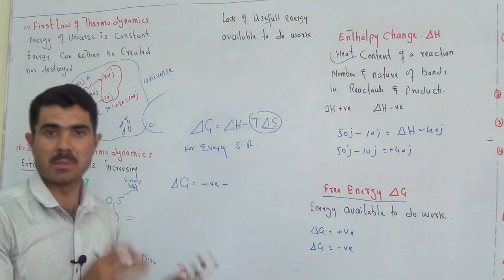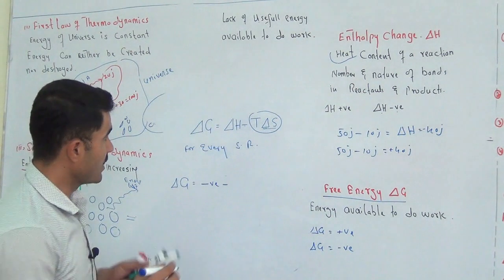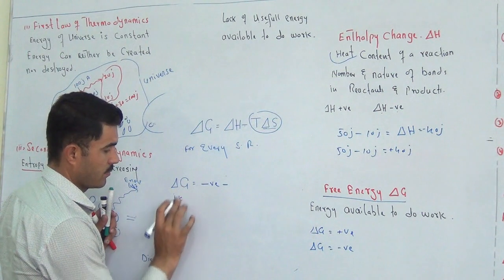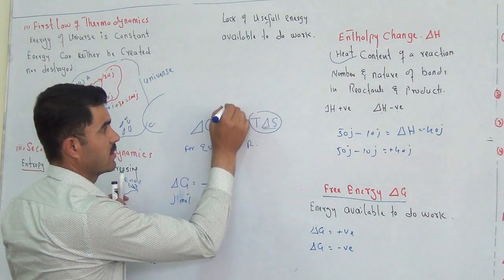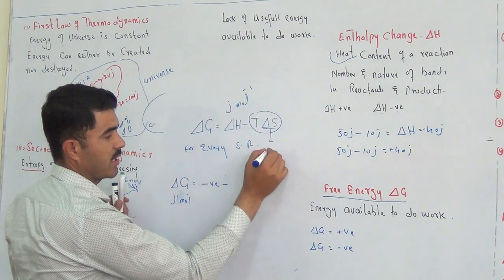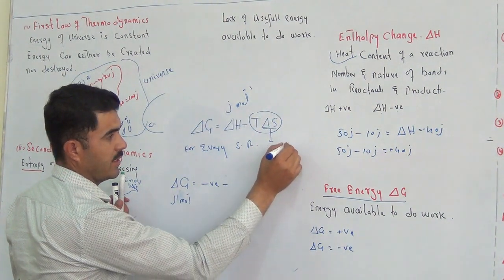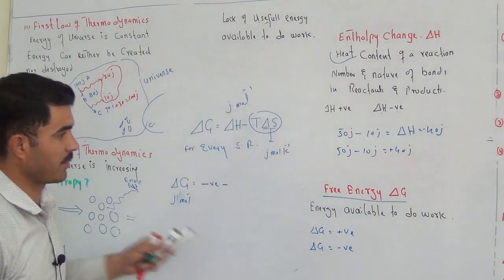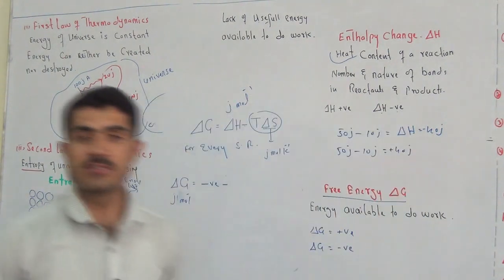For spontaneous reactions, delta G is always negative — that is the point we must remember. The unit of free energy is joules per mole. The unit of heat (enthalpy) is also joules per mole. But the unit of entropy is joules per mole per Kelvin. So we have the units and the relationship between these three parameters: delta G, delta H, and delta S.